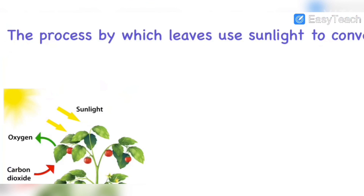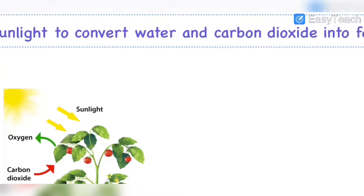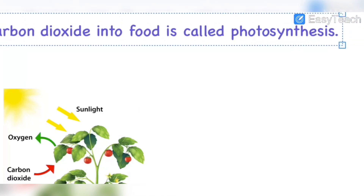So the process by which leaves use sunlight to convert water and carbon dioxide into food is called photosynthesis.